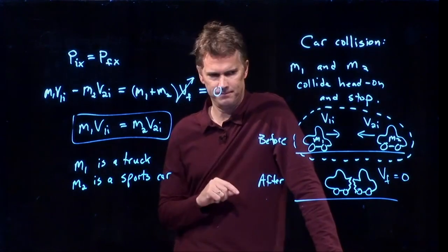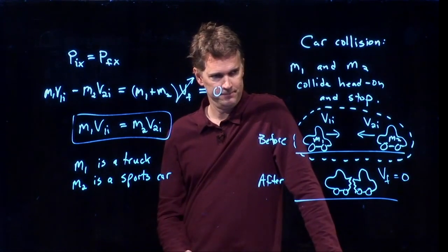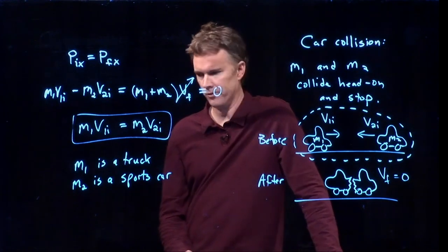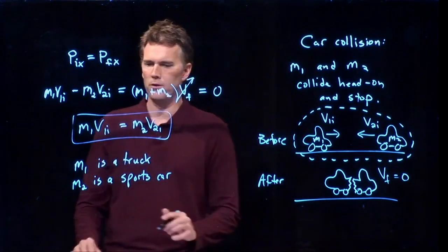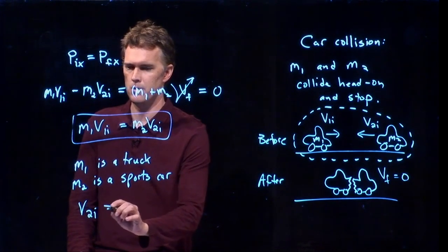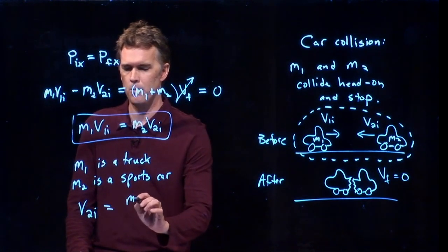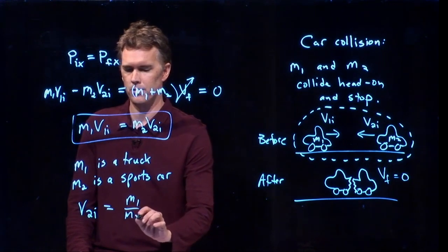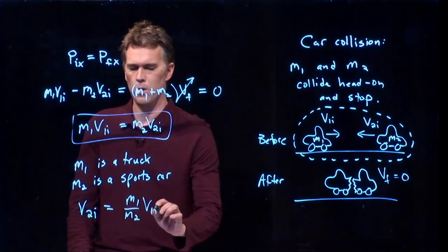Kevin? The car has to be moving faster. The sports car has to be moving faster, right? We can solve this equation very quickly for v2. v2i is going to be m1 over m2 times v1i.